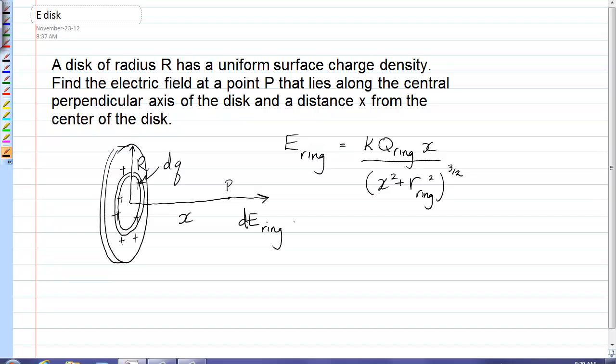And putting the variables in from our ring, we would have k, now the charge on our ring is just little dq, x is the same, the radius of our ring will be just small r, and the thickness of our ring is dr.